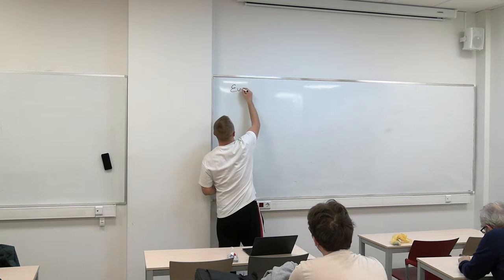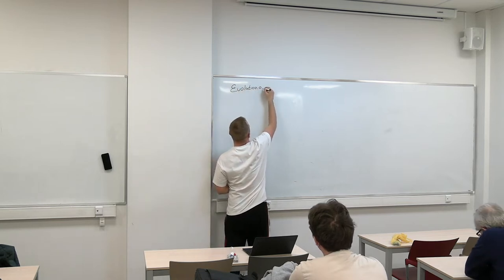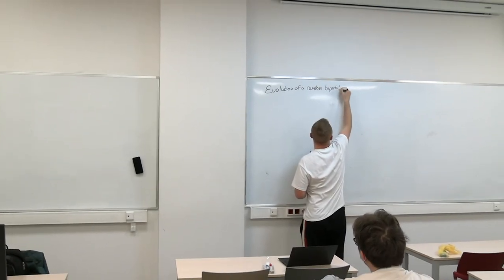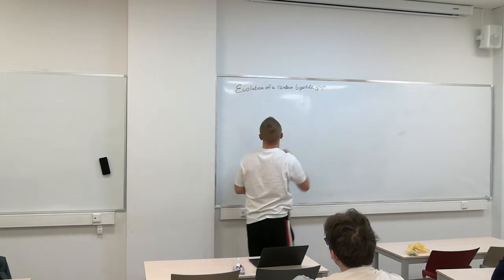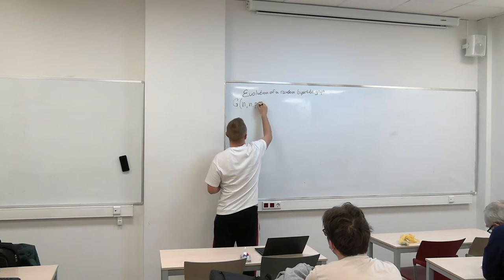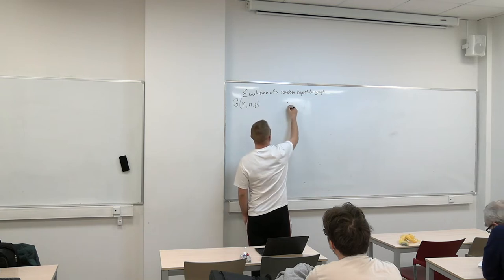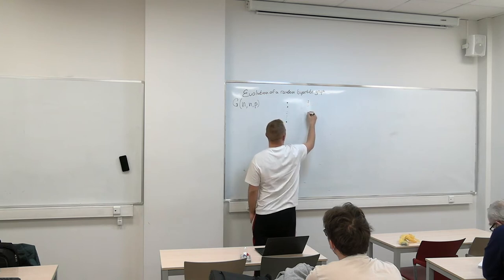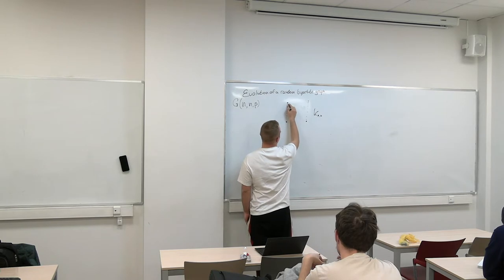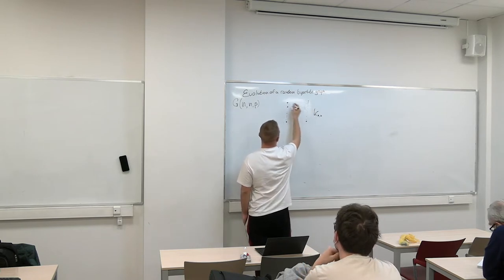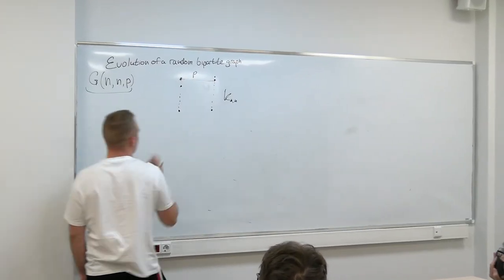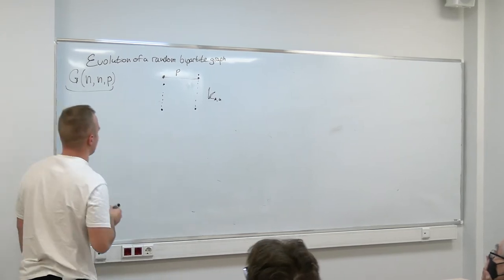This talk is about the evolution of a random bipartite graph. We start with the definitions. Today we are considering the model G(N,N,P). We take a complete bipartite graph K(N,N), and each edge is present in the random graph with probability P — that is, we take each pair of vertices in different parts and there is an edge between them with probability P.